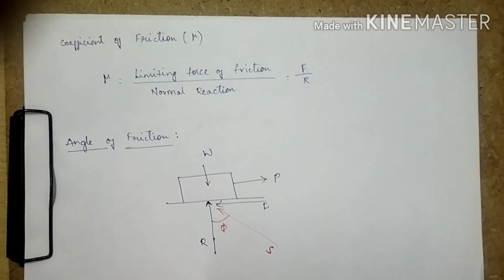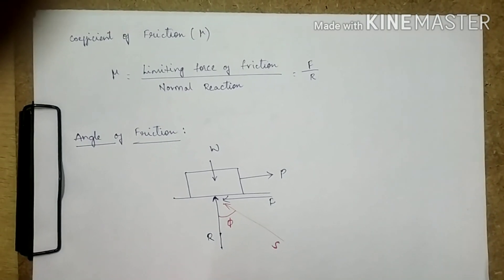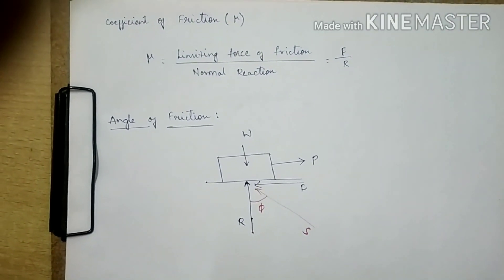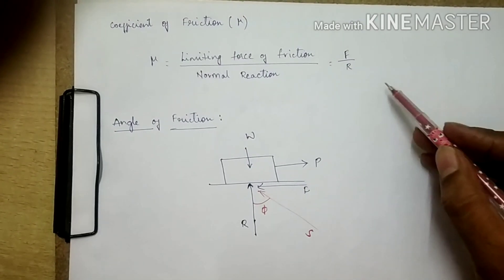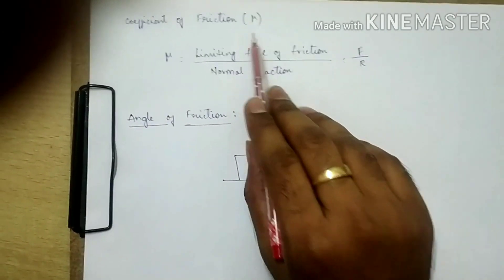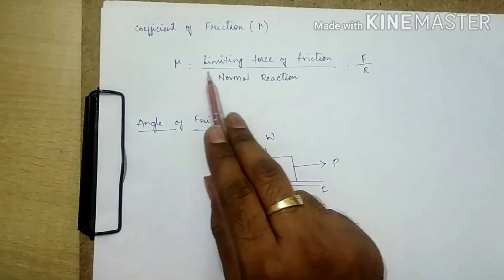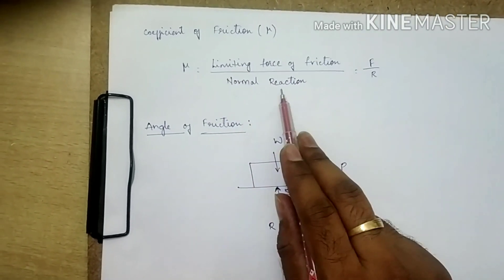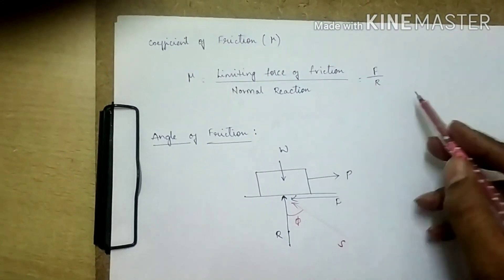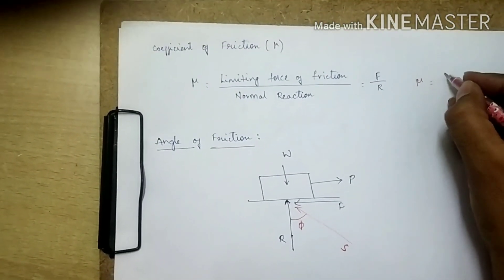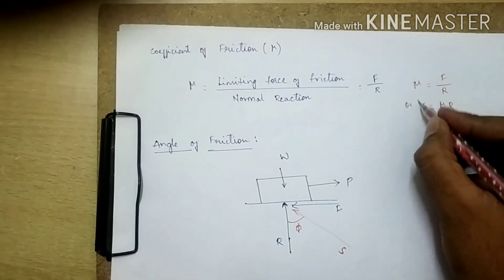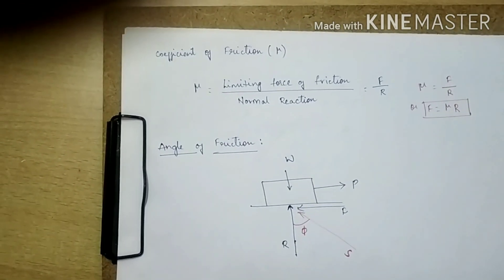Now let us look at the coefficient of friction, represented by mu. The coefficient of friction is defined as the ratio of the limiting force of friction F to the normal reaction R between the two bodies. So mu equals F divided by R, or equivalently F equals mu times R. This is one of the important relations to remember.